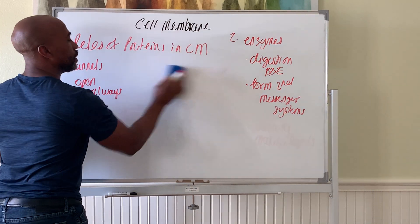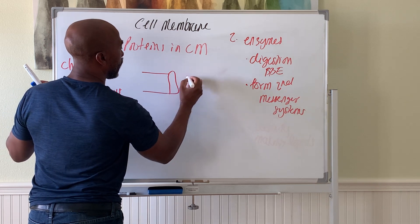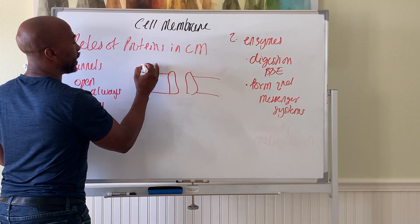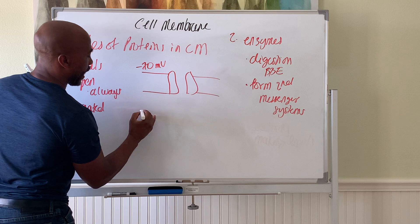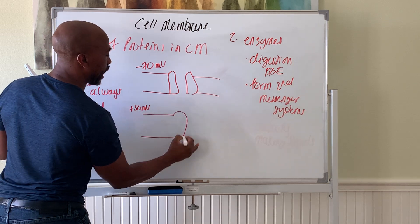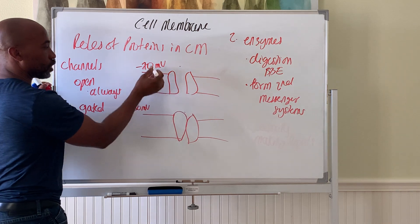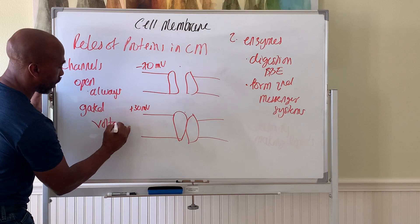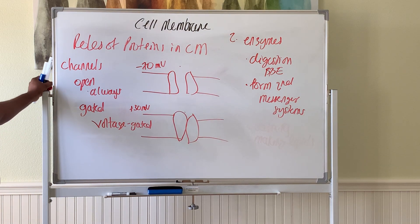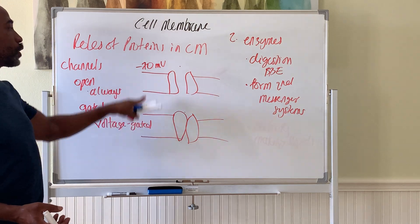The first type of gated channel is the voltage gated channel. The voltage across the cell membrane — say, negative 70 millivolts — controls whether the channel is open or closed. If it changes to, say, plus 30 millivolts, the channel will close. Channels that open or close based on voltage are called voltage gated channels. These are critical in how the brain and muscles work, as they rely on electricity to control membrane permeability.